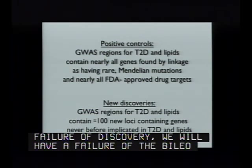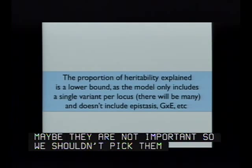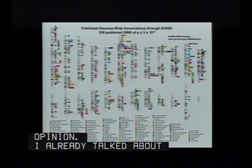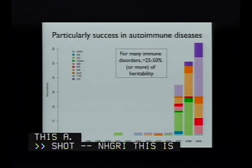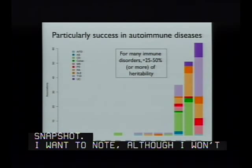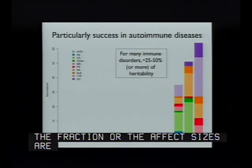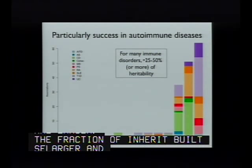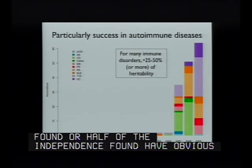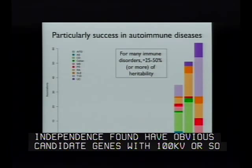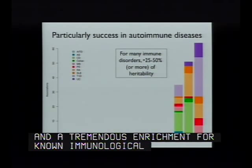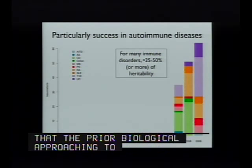There's this wonderful database maintained by NHGRI. About six months ago there were 536 such findings; today I think it's around 1,000 or so. This approach has been particularly successful for autoimmune diseases: effect sizes are larger, the fraction of heritability is larger, about half of the SNPs found have obvious candidate genes within 100 KB, and there's a tremendous enrichment for known immunological regulators—good evidence that prior biological approaches to autoimmunity converge with the genetic approach.